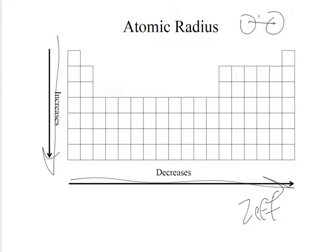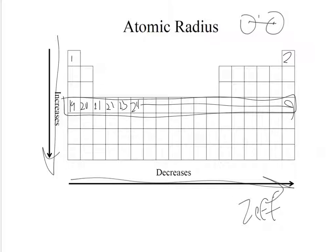Atomic radius decreases as you move across a period because of Zeff. Your nuclear charge is increasing. Your number of protons is increasing. These are your atomic numbers, which is your number of protons. So they're increasing as you go this way. The increasing number of protons creates a greater force of attraction on the electrons. Since you're in the same row, you're not adding any more layers, but you're increasing your number of protons. That greater force pulls them closer into the center, causing the atomic radius to decrease.